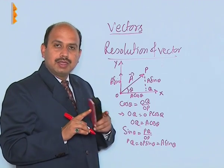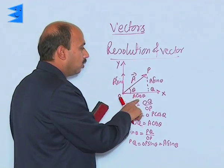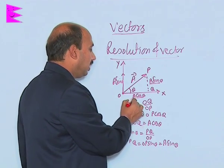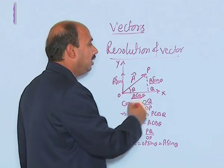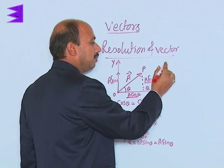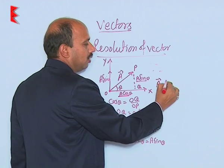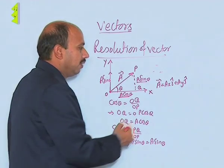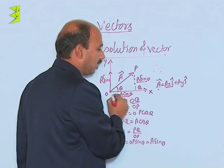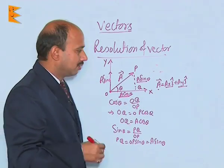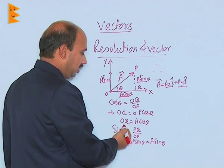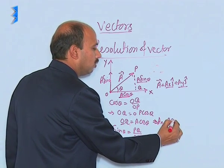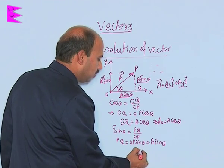Vector A has been split into two parts: A cos theta and A sin theta. But these are the scalar components. If you want to make them vectors, you can write vector A equal to Ax î cap plus Ay ĵ cap. So vector A has two vectors: Ax î along the x-axis and Ay ĵ cap along the y-axis. As you know, Ax is equal to A cos theta and Ay is equal to A sin theta.